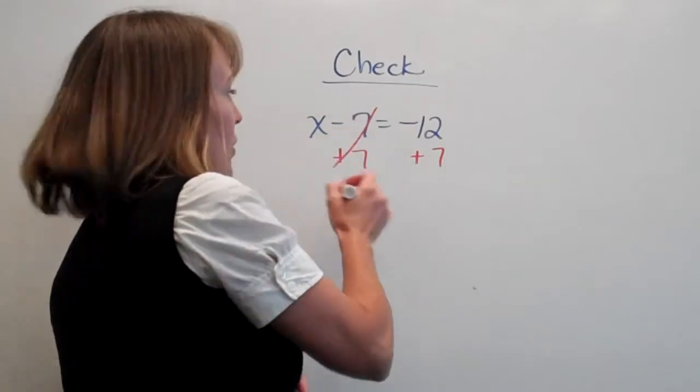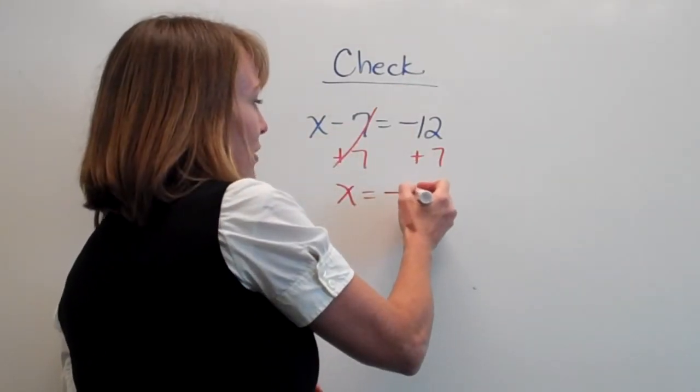7 minus 7, that's 0. I'm left with x is equal to negative 5.